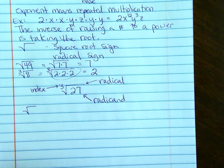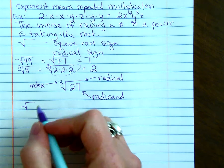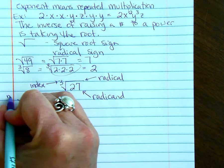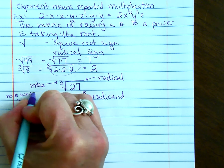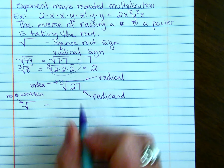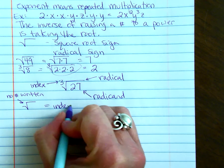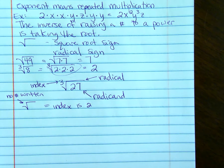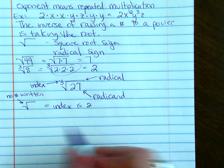If you see the radical symbol with no number written, then the index is 2. It's just the square root, and we don't write a number for the index.